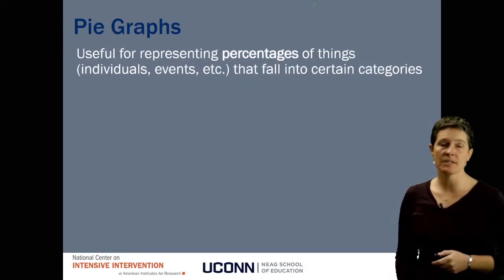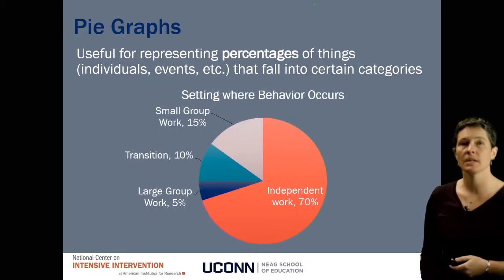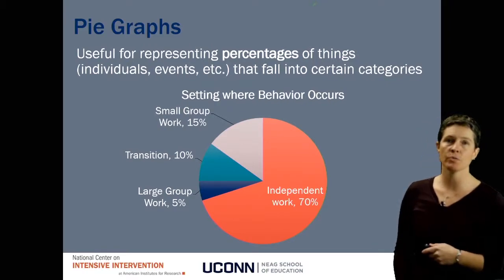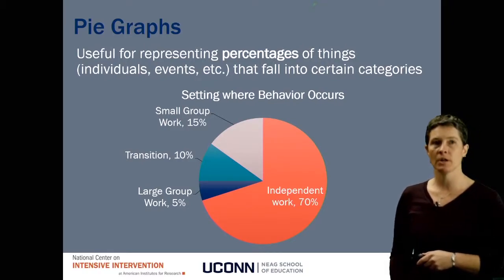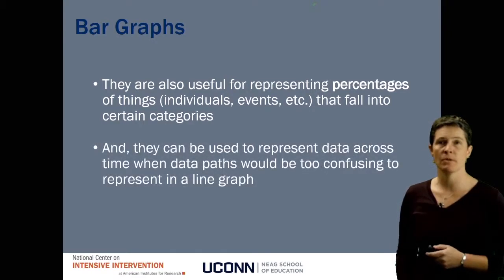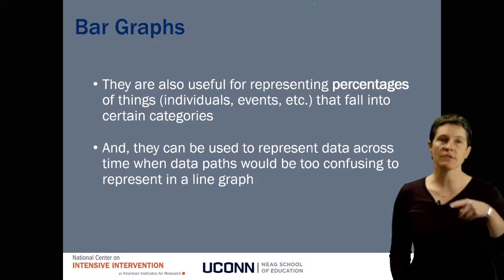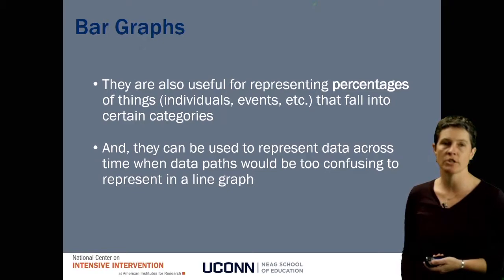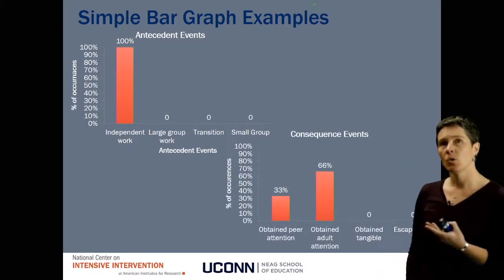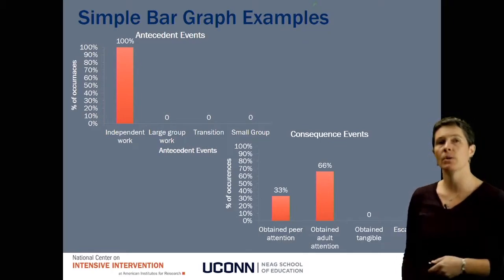Pie graphs are useful for representing percentages of things — intervals, events, or individuals that fall into certain categories. We often use them to summarize ABC information, such as what percent of behavior occurred during independent work time versus small group or large group time. Bar graphs are used for very similar purposes and are largely interchangeable with pie graphs. Both can summarize categorical data, and bar graphs can also show data across time when there are multiple data paths that would be too confusing in a line graph. For example, these simple graphs of antecedent and consequence events clearly show that a behavior most often happens during independent work and is most frequently followed by adult attention.